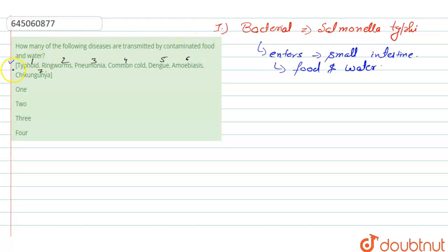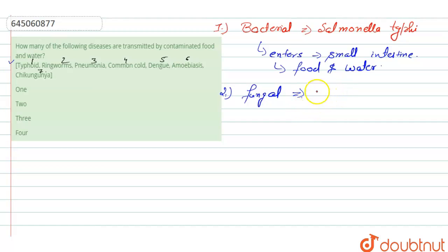Next is ringworm. Ringworm is a fungal disease, mainly caused by fungi of the genus Microsporum. It is the most common type of fungal disease found in humans. Since it is a fungal disease, it does not spread through contaminated food and water, so this option is incorrect.